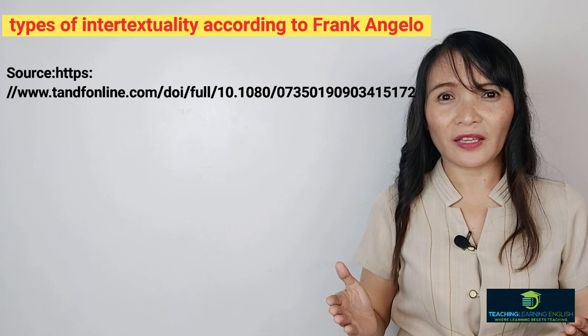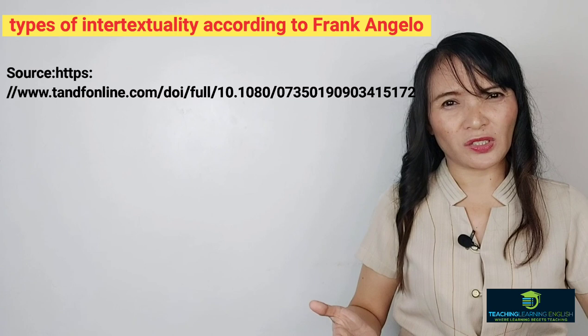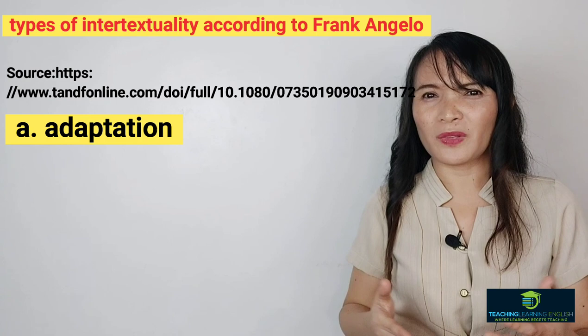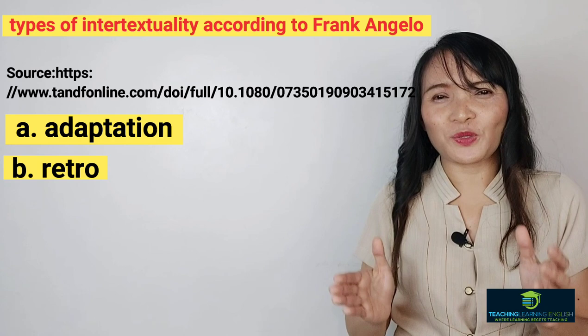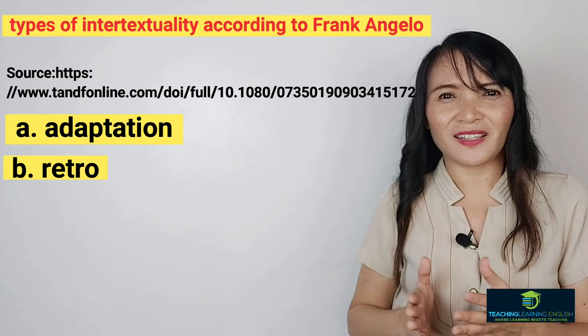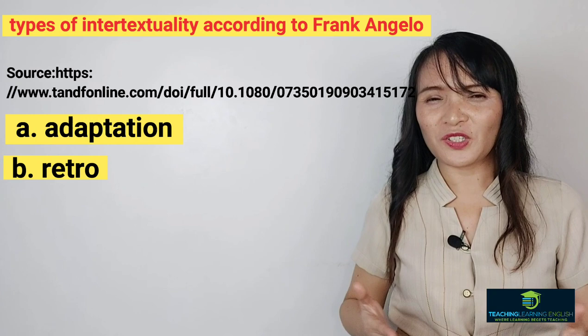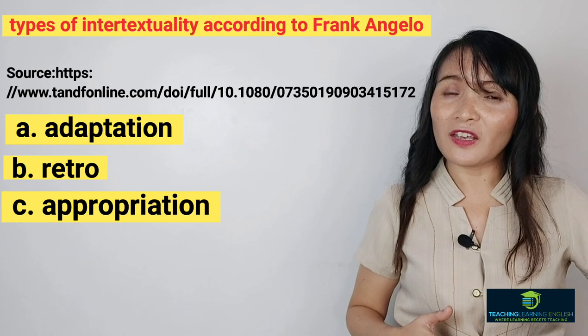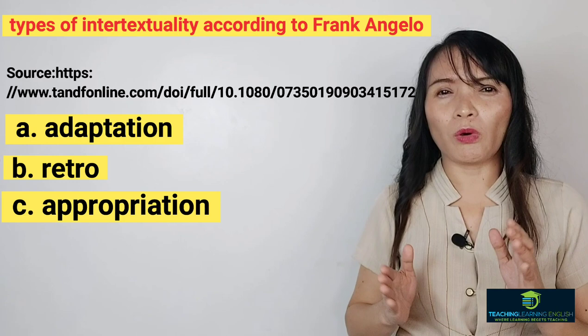One author, Frank Angelo, cited other types of intertextuality. They are: adaptation — recasting into a new form; retro, meaning recycling — the most pervasive strategy of refashioning old rhetorical forms and adapting them to new uses; and appropriation — the act of borrowing or taking others' meaning to one's own end, very common in modern and post-modern art and photography. He also cited parody and pastiche. Some authors may use different terms to identify the types of intertextuality.